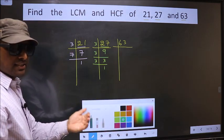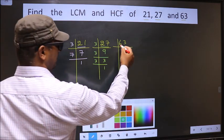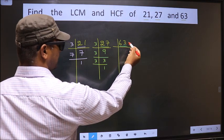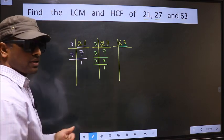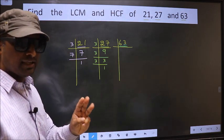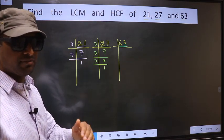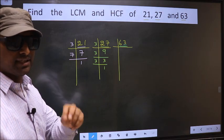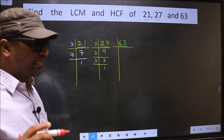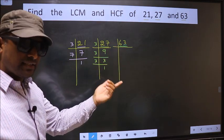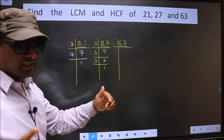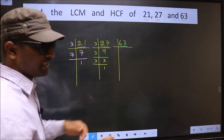Now the other number, 63. Here the last digit 3 is not even, so this number is not divisible by 2. Next prime number is 3. To check divisibility by 3, we should add the digits. That is 6 plus 3 equals 9. Is 9 divisible by 3? Yes. So this number is also divisible by 3.